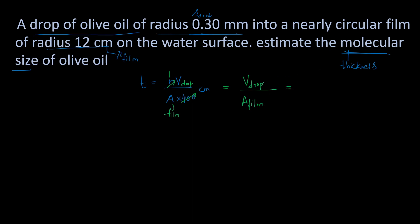The formula is: thickness T equals volume of drop divided by area of film. The drop is spherical so volume equals (4/3)πr³ where r is the radius of the drop. The film area is πR² where R is the radius of the film.